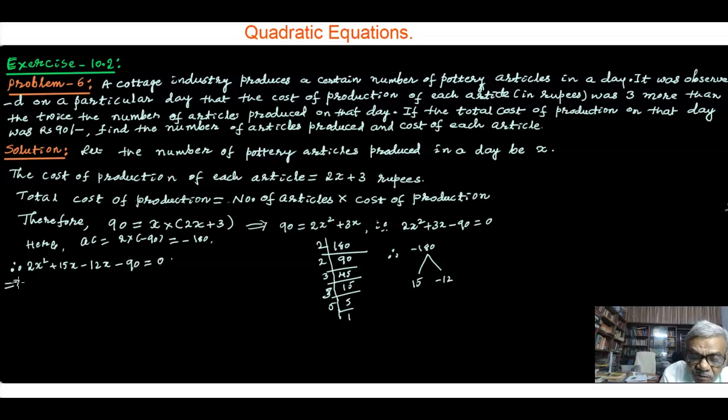Therefore, I can split here the middle term as 15x minus 12x minus 90 equal to 0. I would like to take this grouping for the adjustment. So here we can have 2x square minus 12x plus 15x minus 90 equal to 0, the same thing, which I can write down.